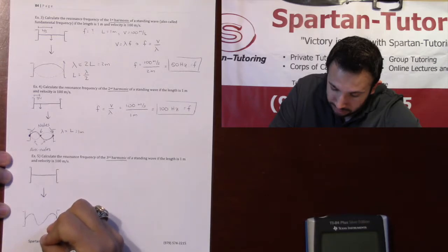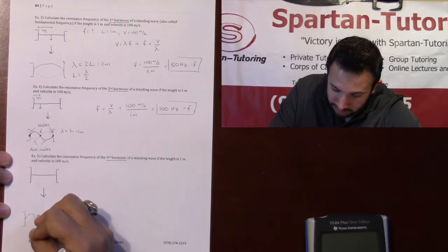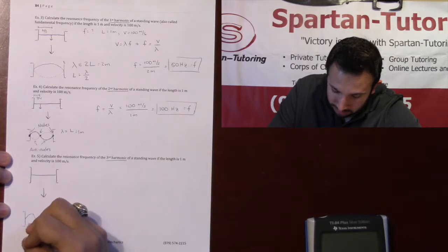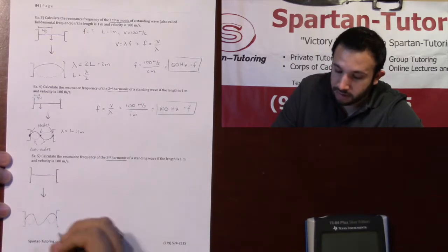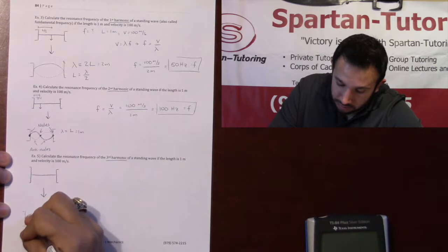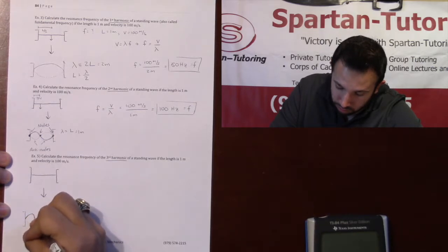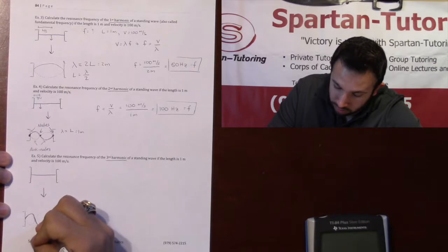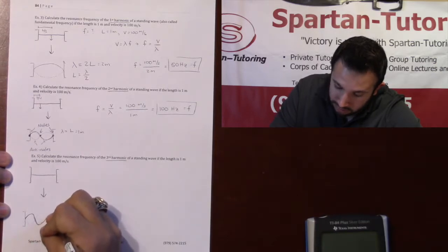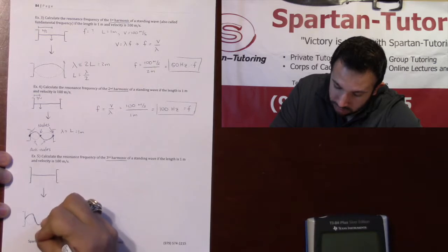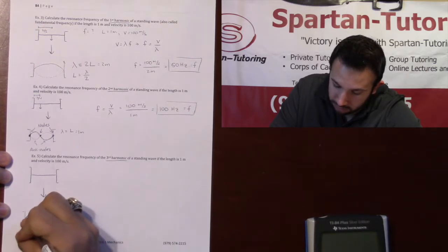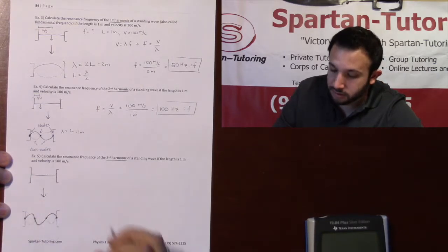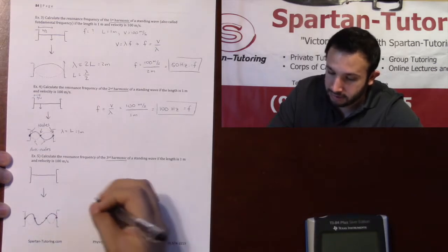And we'll just keep going down. And I'm really bad at drawing pictures. I apologize. Up. And go like this. And so, this would be your third harmonic. Your third harmonic would end up having 3 anti-nodes and 1, 2, 3, 4 nodes.